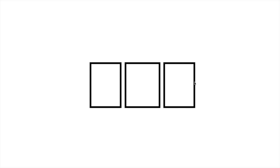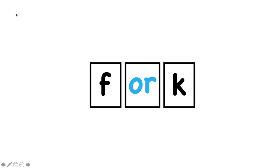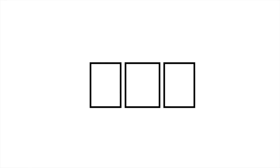I know the letter F makes the F sound. The next sound is OR, and in this word the letters O-R make the OR sound. And the last sound is K — I know the letter K makes the K sound.